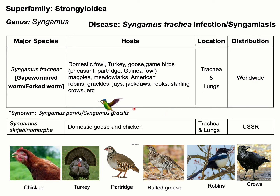There is another parasite of domestic goose and chicken under the same genus, which is Syngamus escarza venumorpha. The distribution of this parasite is in the former Union of Soviet Socialist Republics. The disease caused by this parasite is called Syngamus trachea infection, or syngamiasis.